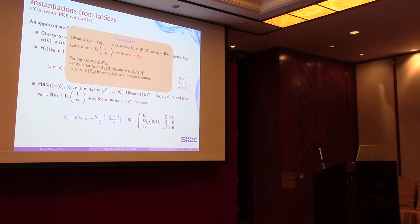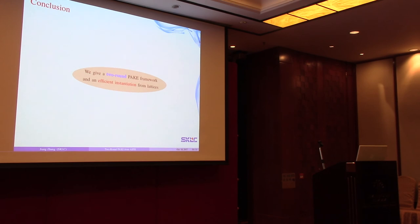For smoothness, because each output bit of the hash function is determined by ZI, it is sufficient to show ZI is uniformly random. For any ciphertext-message pair that fails, we can show that AY defined by this formula is far from the lattice generated by B for any non-zero integer A. By our stronger adaptive smoothness, this shows that ZI computed this way is uniform and random. Here is the summary. We give two novel PAKE frameworks and an efficient instantiation from lattices.